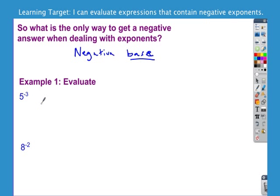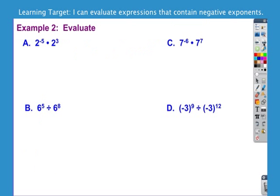This is 1 over 5 cubed. Well, 1 over 5 cubed is 1 over 125. Not 125, not negative 125, all right? 8 to the negative 2 would be 1 over 8 squared, which is 1 over 64. Notice, again, answer is not negative because the base is not negative.